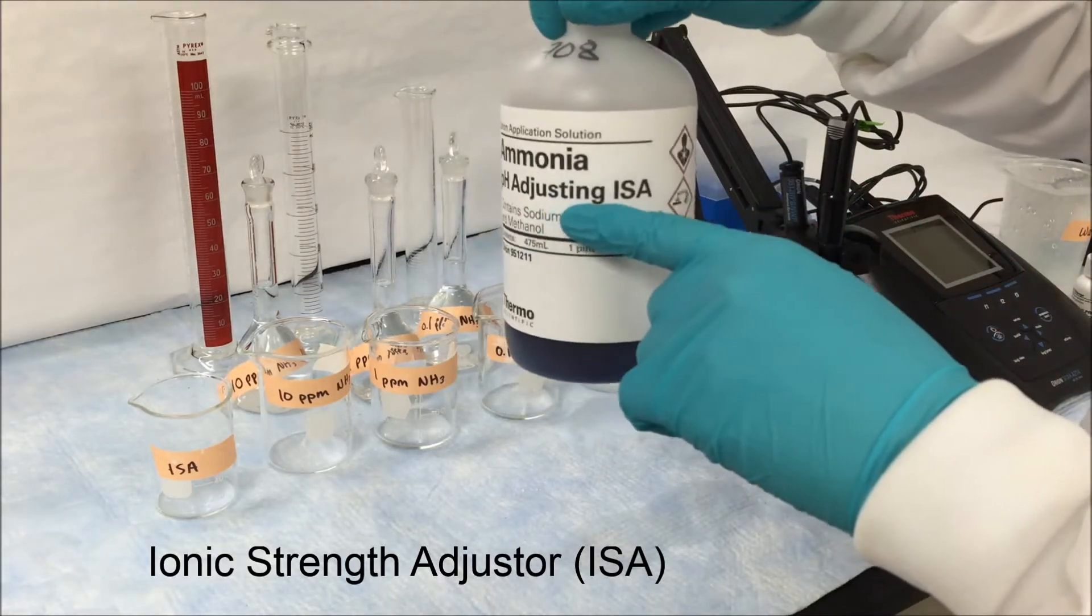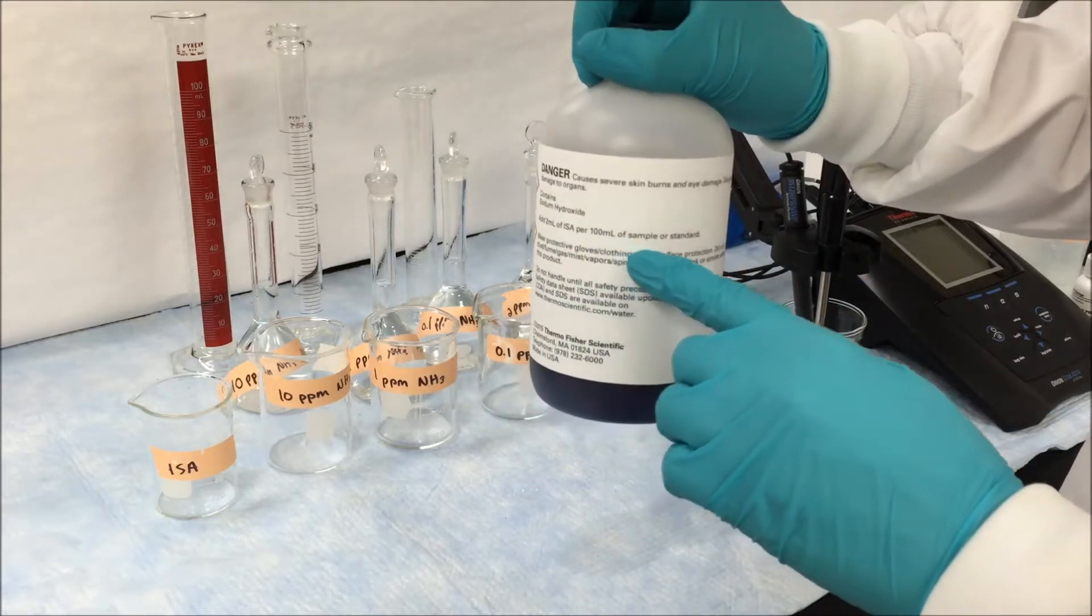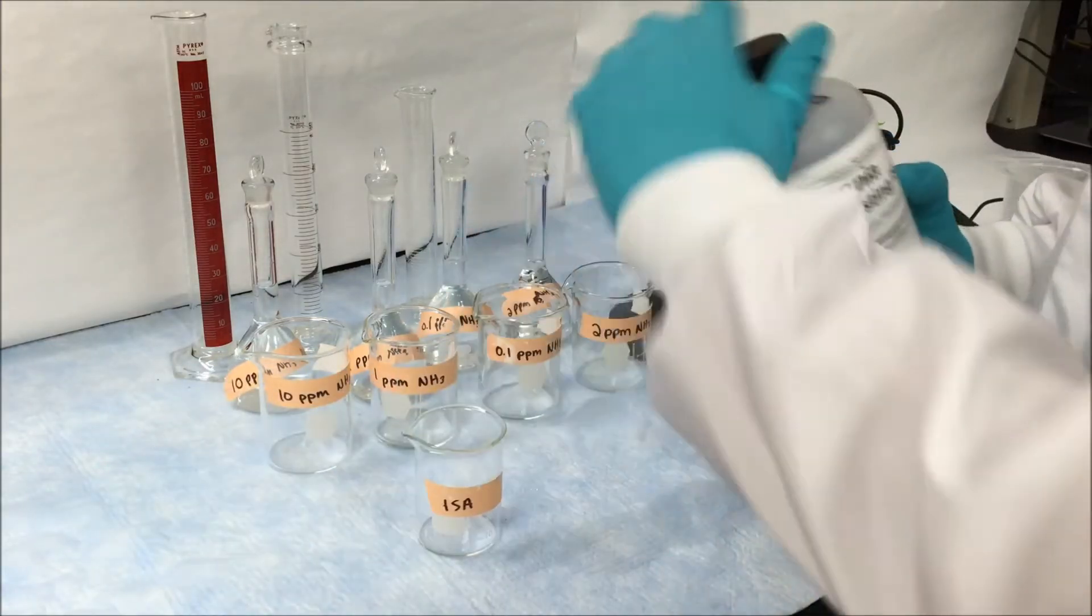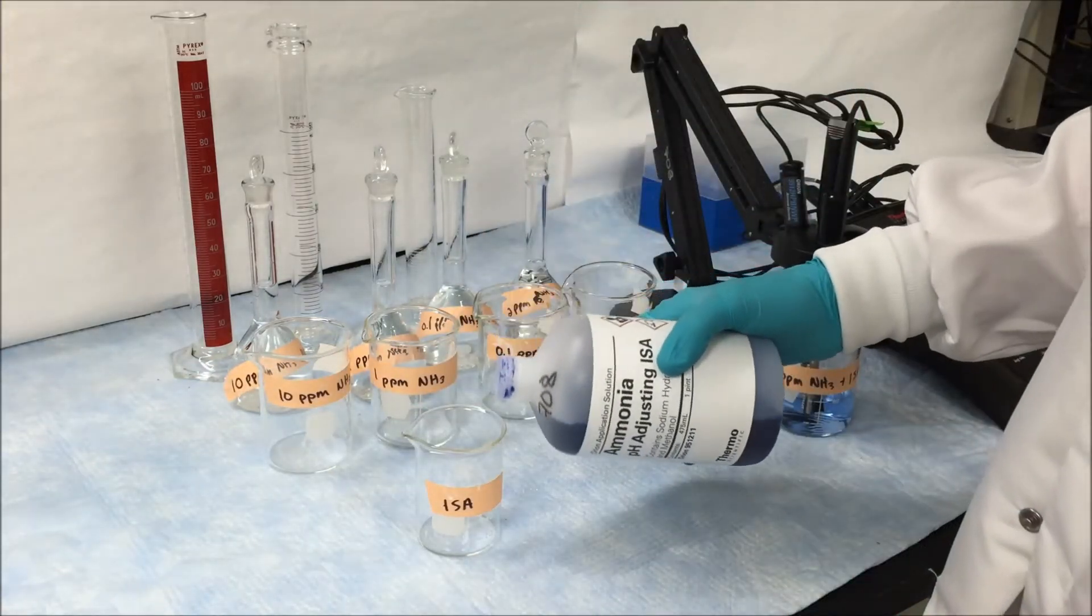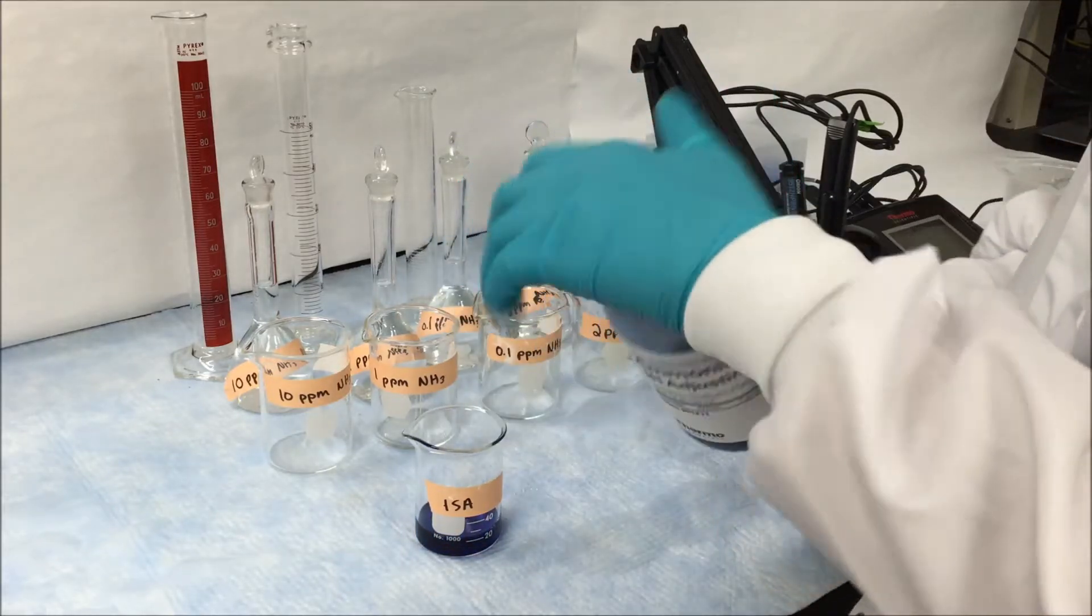First we start by preparing our calibration standards by adding our ionic strength adjuster or ISA. This ISA uses 2 ml of ISA per 100 milliliters of sample. We always pour out a small aliquot of ISA into a separate beaker so that we don't contaminate our stock solution.